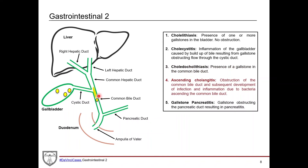Ascending cholangitis is when you have obstruction of the common bile duct, either from a gallstone or a tumor — such as a pancreatic head tumor or cholangiocarcinoma. Either way, bile builds up, and over time that biliary sludge becomes a breeding ground for bacteria. Bacteria build up and cause an infection that inflames the common bile duct. It's called ascending because the infection then ascends up the biliary tree and can even reach the liver.